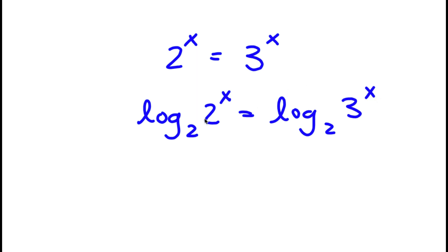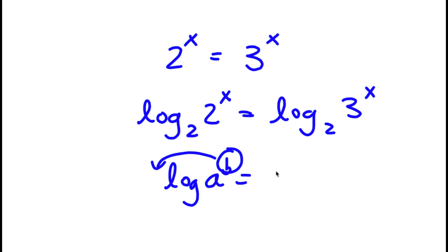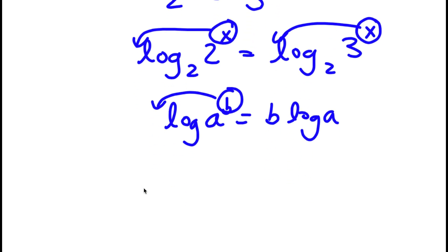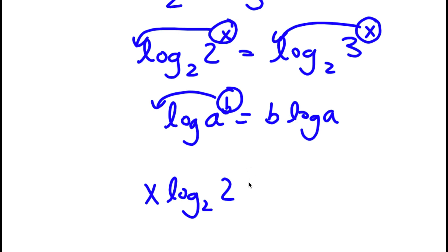Now, if I have something in the form log a to the power of b, I can actually move this exponent b to the front. So this is going to equal b times log a. So now I can move x to the front on both sides. I'm going to have x times log base 2 of 2 is equal to x times log base 2 of 3.